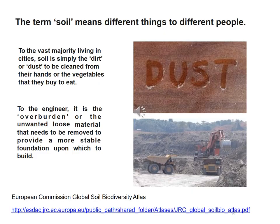Soil means different things to different people. Most people think of it as dirt — something you wash off surfaces or vegetables. An engineer might think of it as a medium for building foundations for structures. The Natural Resource Conservation Service in the United States has six different definitions of soil depending on whether you're an engineer, farmer, gardener, forester, or textile manufacturer — there are lots of different ways it can be categorized.